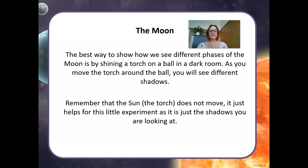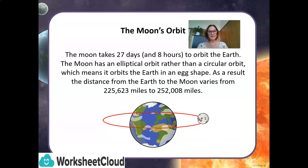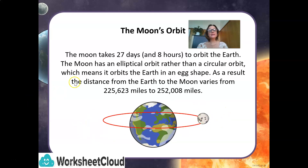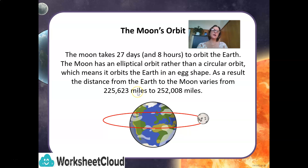Here we have the moon's orbit. The moon takes 27 days and 8 hours to orbit the Earth. The moon has an elliptical orbit rather than a circular orbit — it orbits the Earth in an egg shape. As a result, the distance from the Earth to the moon varies from about 225,623 miles to 252,008 miles.